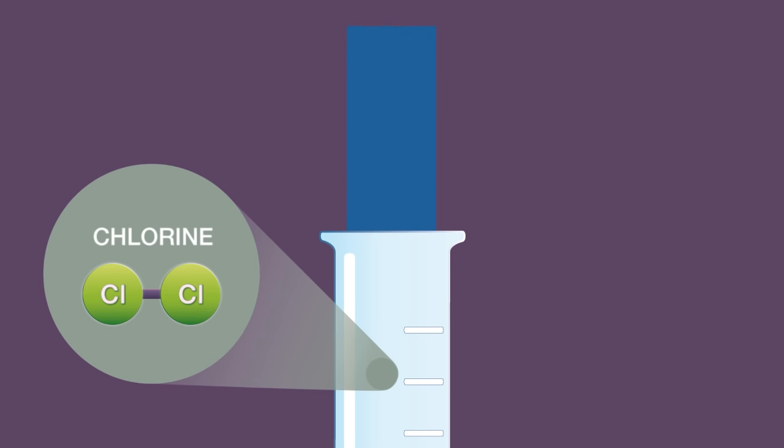Chlorine turns damp blue litmus paper red and eventually bleaches it to white.